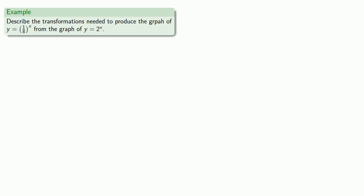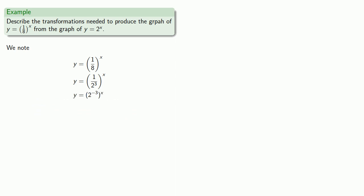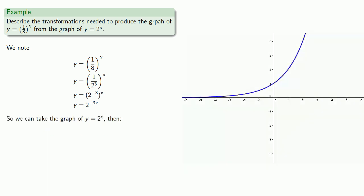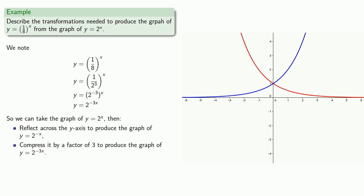We could also find the graph of y equals (1/8) to the x. Applying rules of exponents, 1/8 is the same as 1 over 2 to the third, which is the same as 2 to the power negative 3. So this is the graph of y equals 2 to the power negative 3x. We can take the graph of y equals 2 to the x, reflect it across the y-axis to produce the graph of y equals 2 to the power negative x, then compress it by a factor of 3 to produce the graph of y equals 2 to the power negative 3x.